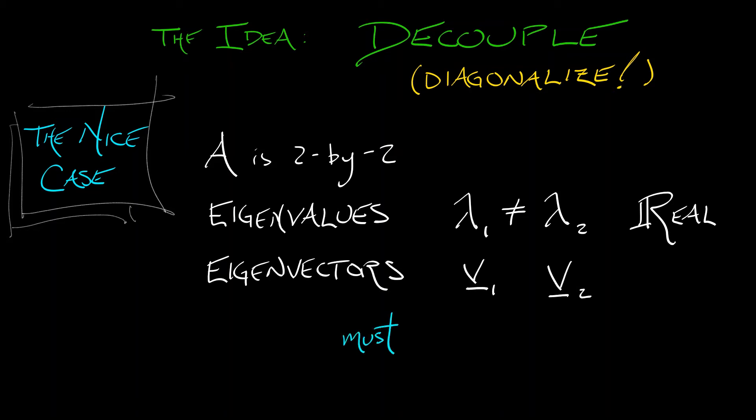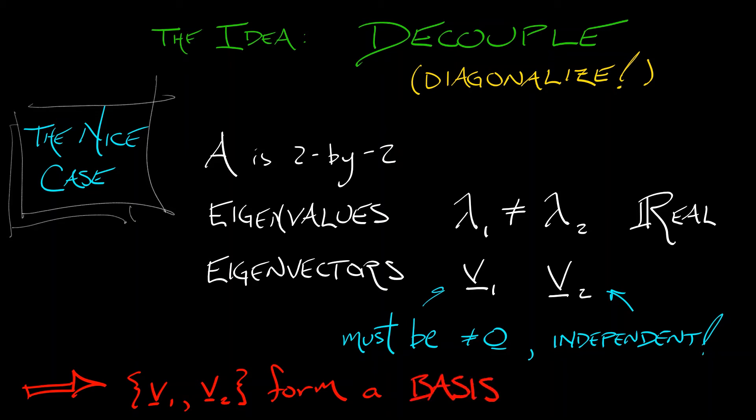Now, what do we know about these? They're eigenvectors, so they must be non-zero. And because these two eigenvalues are different, they must be independent eigenvectors. If they were parallel, then they would have the same eigenvalue. They would span the same eigenspace. That means that we have a basis. These are independent eigenvectors, and we've got a basis, an eigenbasis. I like that word. Eigenbasis.